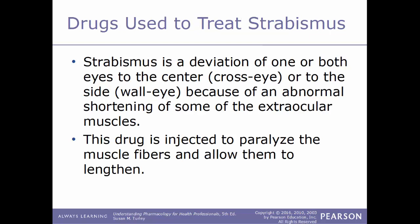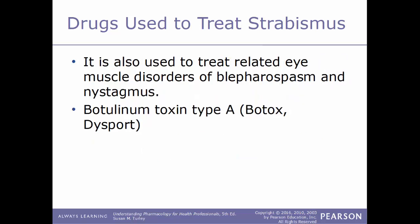We'll end this chapter talking about drugs used to treat strabismus. Strabismus is the deviation of one or both eyes to the center or to the side — this includes being cross-eyed or wall-eyed. It is caused by an abnormal shortening of some of the extraocular muscles, so the eyes are not centered correctly. Drugs used to treat this condition are injected to paralyze the muscle fibers to allow them to lengthen. This is also used to treat related eye muscle disorders of blepharospasm and nystagmus. An example is botulinum toxin type A, more commonly known as Dysport or Botox.